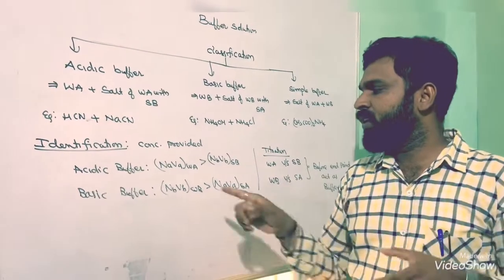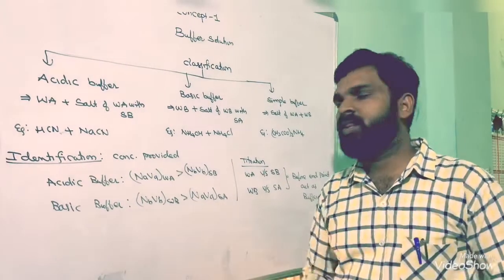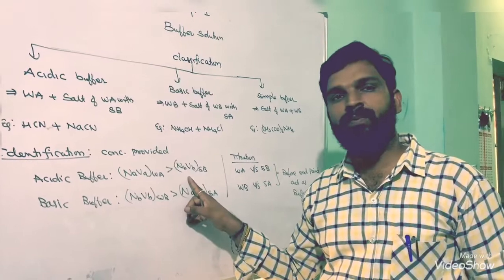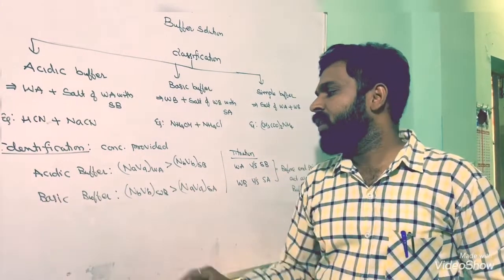buffer: When weak acid and strong base are mixed together, if number of equivalents of weak acid is more than number of equivalents of strong base, then an acidic buffer will be formed. And